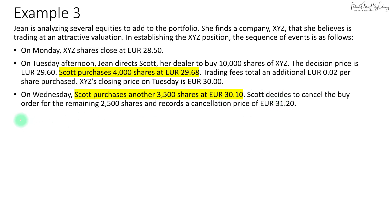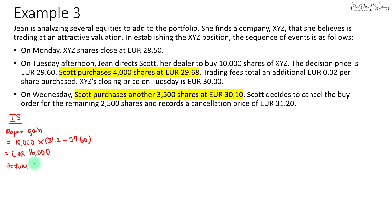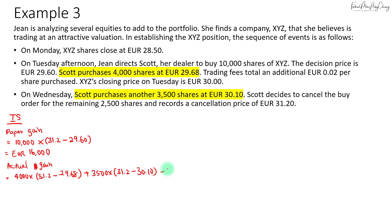The remaining 2,500 shares were cancelled at a price of 31.20. When calculating the implementation shortfall, we first calculate the paper gain. The paper gain here would be the 10,000 shares that Gene wants to buy, and the cancellation price is 31.20 minus the decision price of 29.60, so the paper gain on the portfolio is 16,000 euros. The actual gain on the portfolio comprises the 4,000 shares bought on Tuesday — cancellation price 31.20 minus purchase price 29.68 — plus the 3,500 shares bought on Wednesday at 30.1, minus total commission on 7,500 shares at 2 cents each.